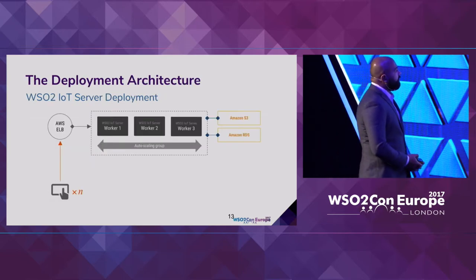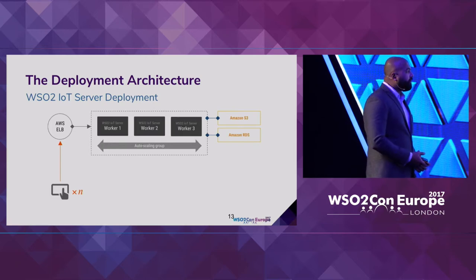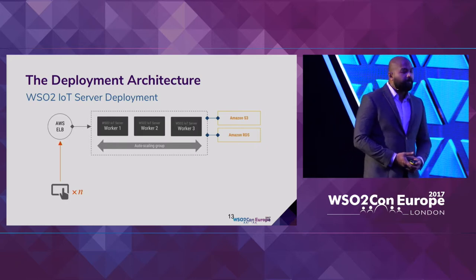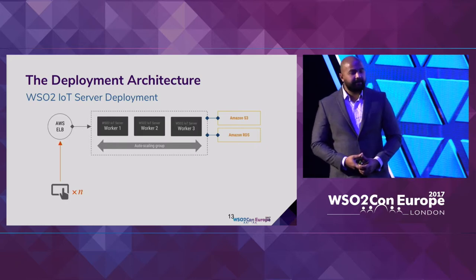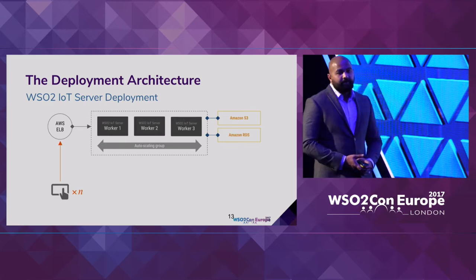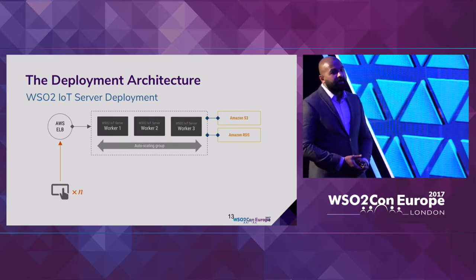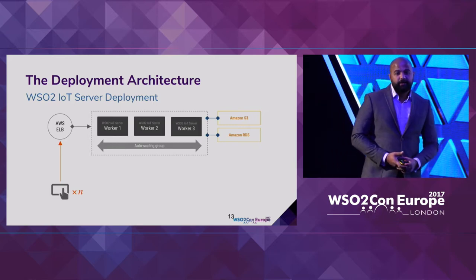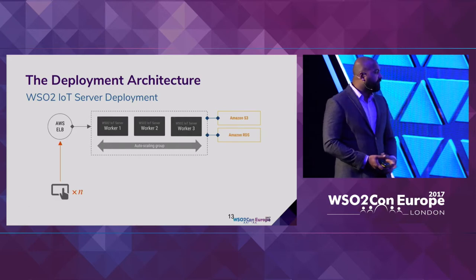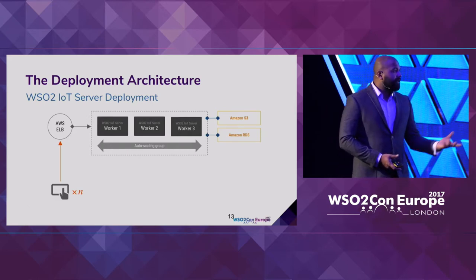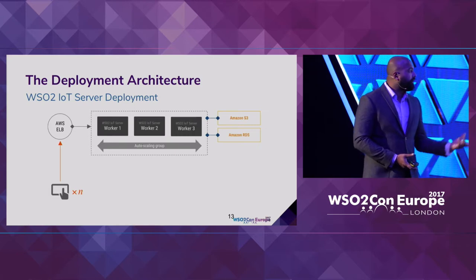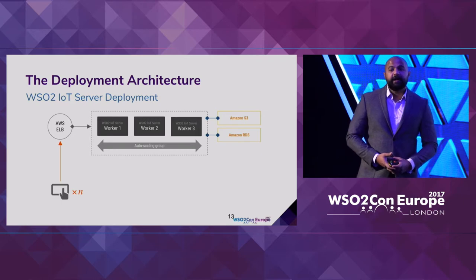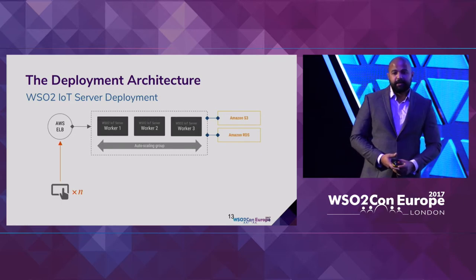The typical deployment architecture is auto-scaling, with multiple instances of WSO2 IoT server that can scale up and down according to traffic generated by the devices. This deployment is Amazon-based, using Amazon ELB, Amazon S3, and Amazon RDS.